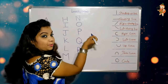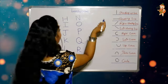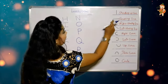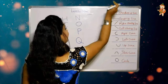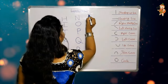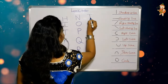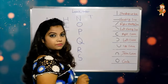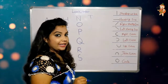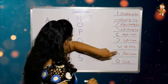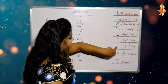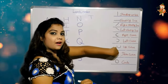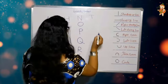Now it's time to make T — one sleeping line and one standing up line. U is very easy — we can use an up curve for U.